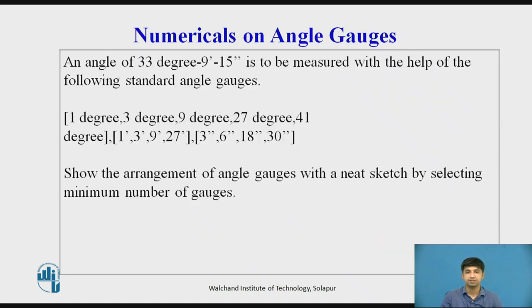Numericals on angle gauges. An angle of 33 degree, 9 minute, 15 seconds is to be measured with the help of the following standard angle gauges: 1 degree, 3 degree, 9 degree, 27 degree, 41 degree, 1 minute, 3 minute, 9 minute, 27 minute, 3 seconds, 6 seconds, 18 seconds, 30 seconds. And show the arrangement of angle gauges with a neat sketch by selecting minimum number of gauges.